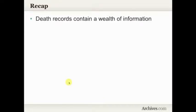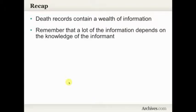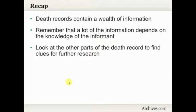To recap, talking about death certificates: they contain a wealth of information. When we get a death certificate, especially for those ancestors we've been looking for a while, and we get all that great information about their birth, their parents, and mother's maiden name, it's one of those records where we do the genealogy happy dance. But we need to remember that the accuracy of that information depends upon the knowledge of the informant — how well did they know that person? And look at other parts of that death record to find clues for further research: the cemetery, their usual residence, the cause of death — can those lead us to other records we should be looking for?